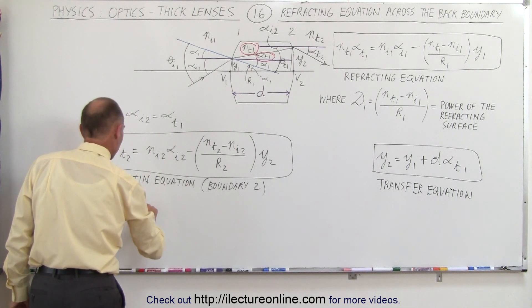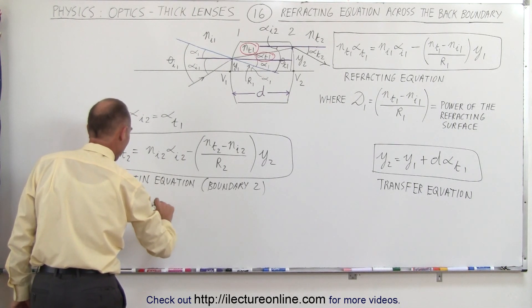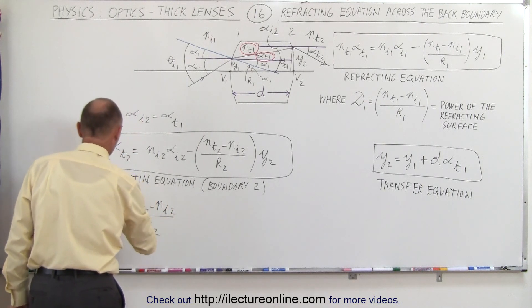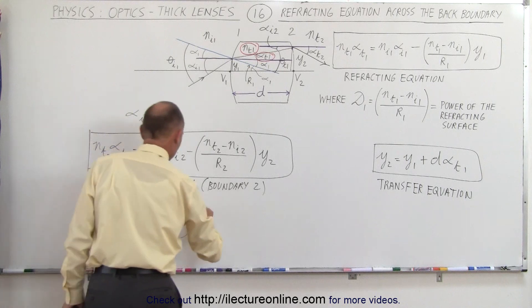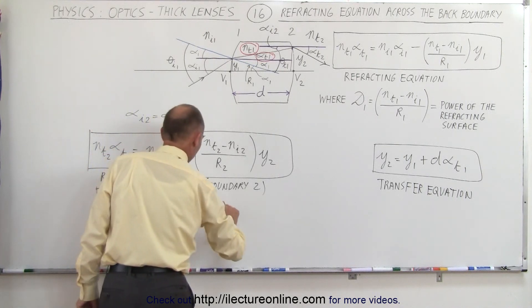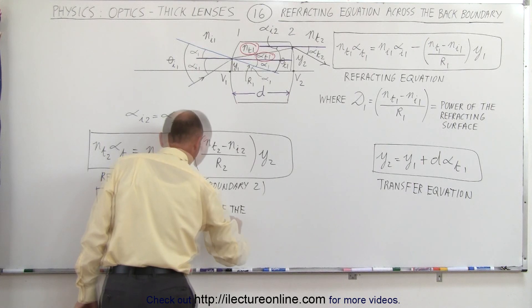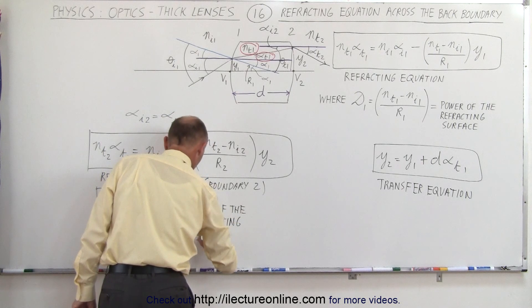and the ratio of the index of refractions. But that would then be, D2 can be defined as being NT2 minus NI2 divided by R2. And that's known as the power of the refracting surface on the back side of the lens, refracting surface number 2.